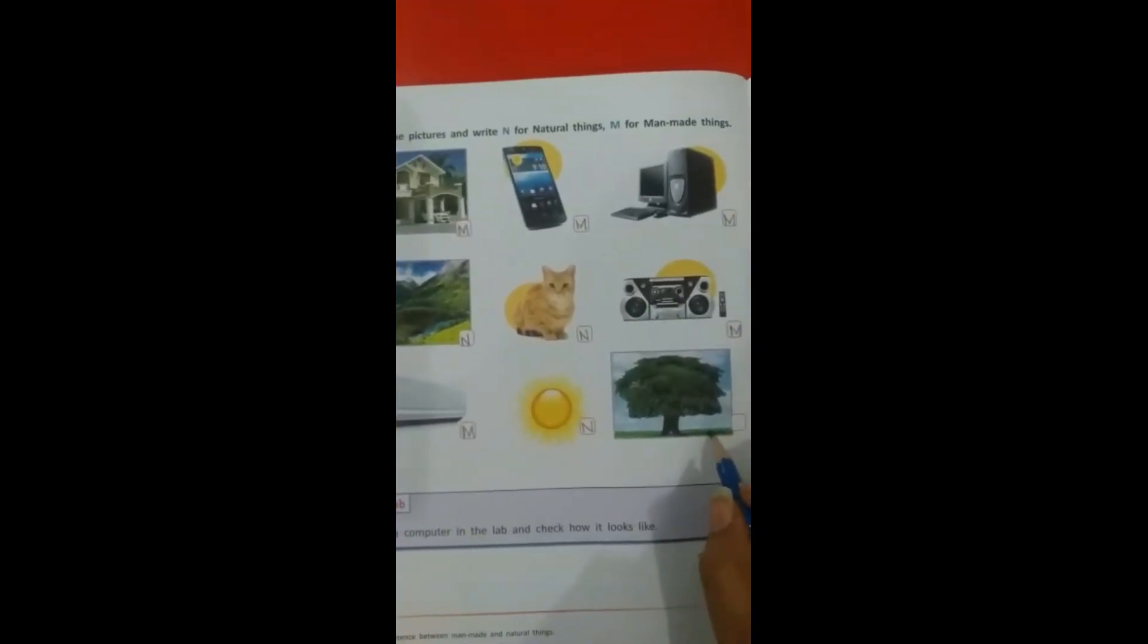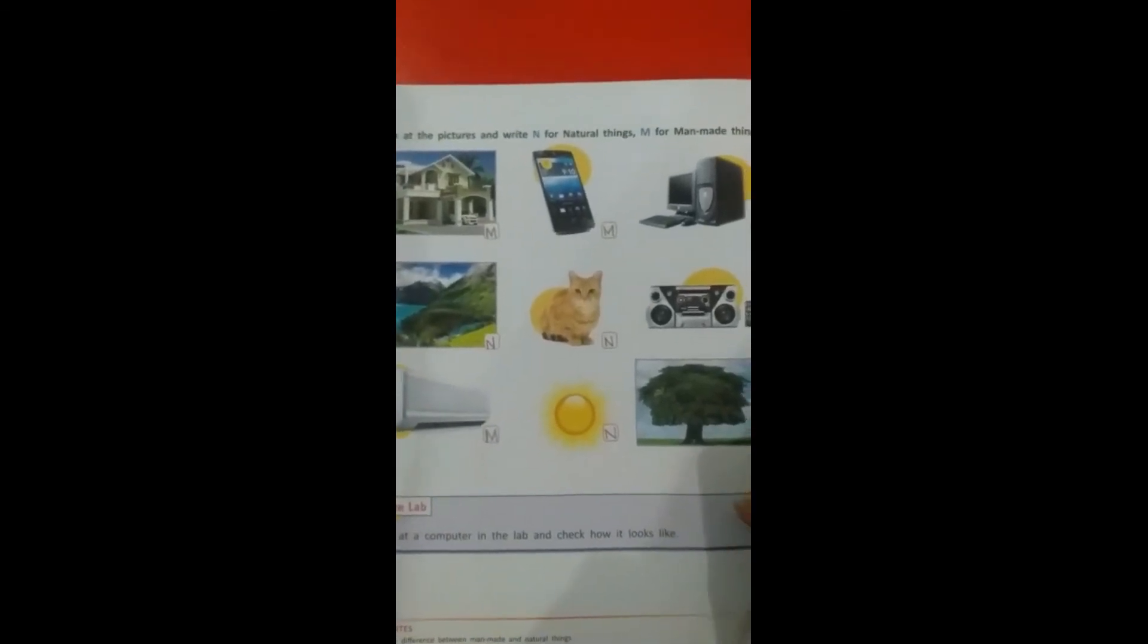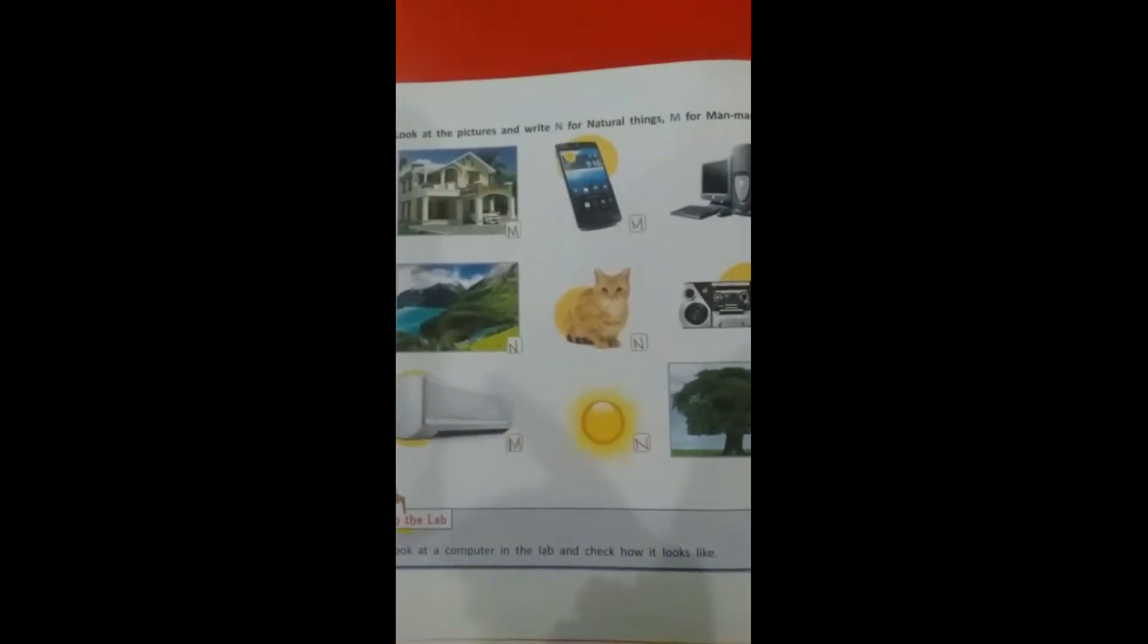What is the next picture? The tree. The tree is a natural thing, so we write N.